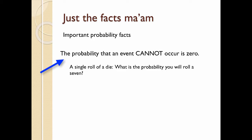The probability that an event cannot occur is zero. And what I mean by that is that you have some event that is just simply impossible. Back to your die. If you have a die that has the numbers one through six on it, what's the probability you roll a seven? Well, zero, because it's impossible. There just isn't a seven there.